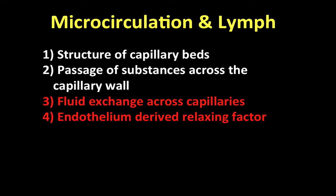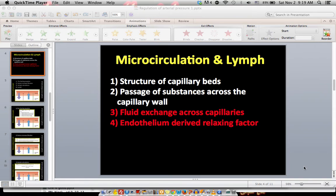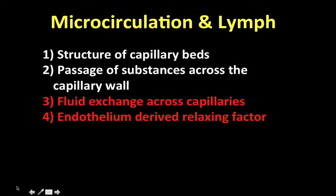Let's review quickly. We talked in the last video about the structure of capillary beds and the passage of substances across the capillary bed. The structure of the capillary beds consists of endothelial cells, the basement membrane, precapillary sphincters, and arterioles that control the flow through those capillary beds, which provide nutrients and exchange in our organs.